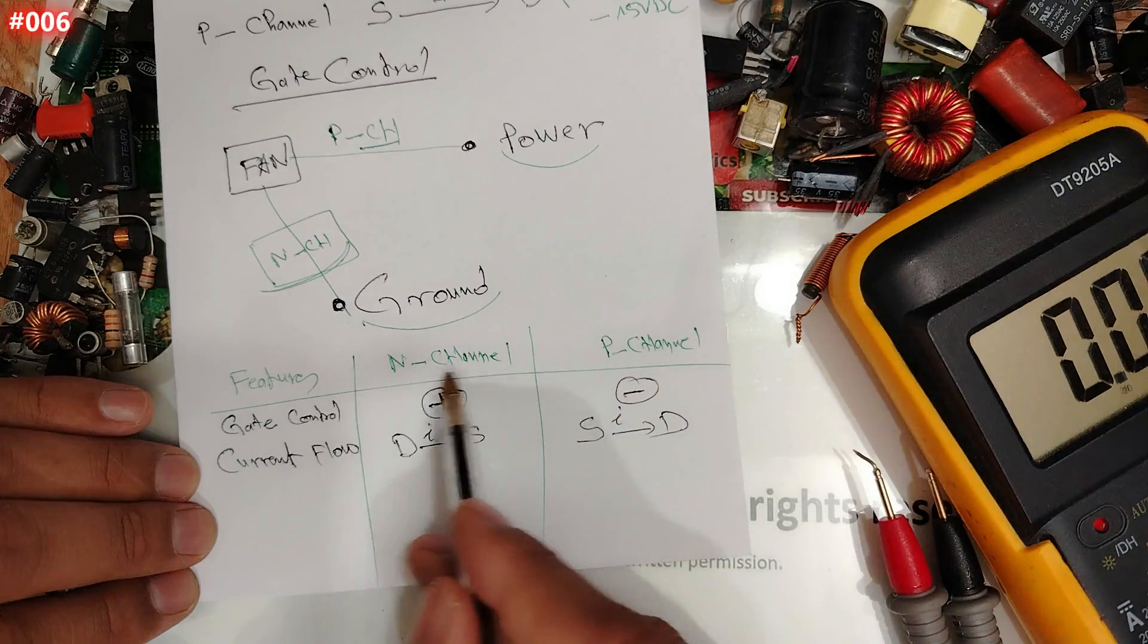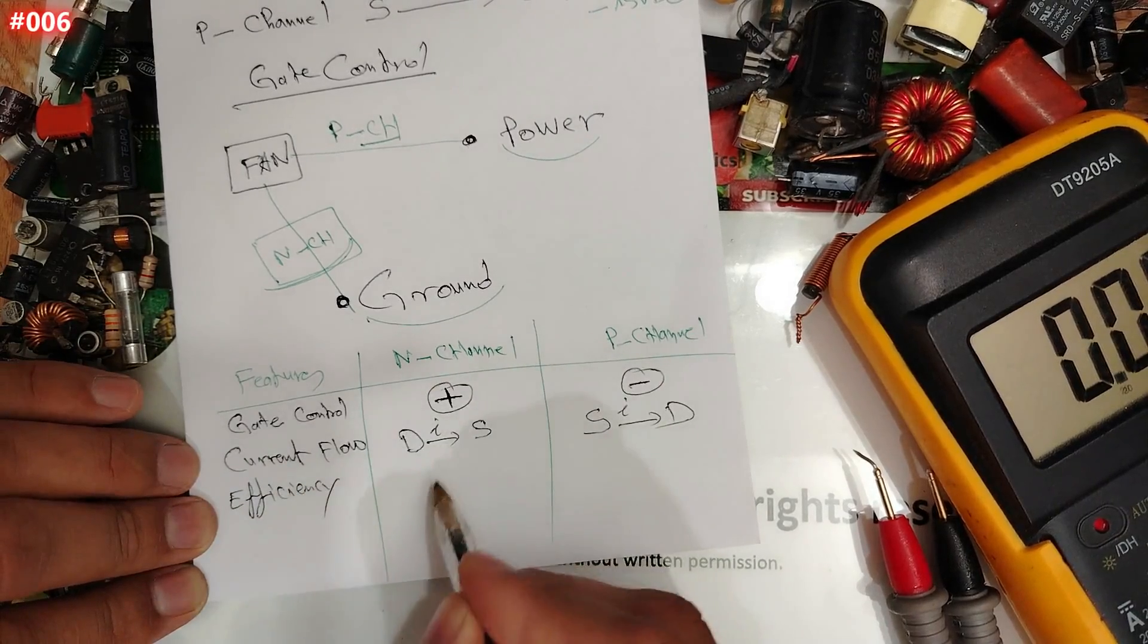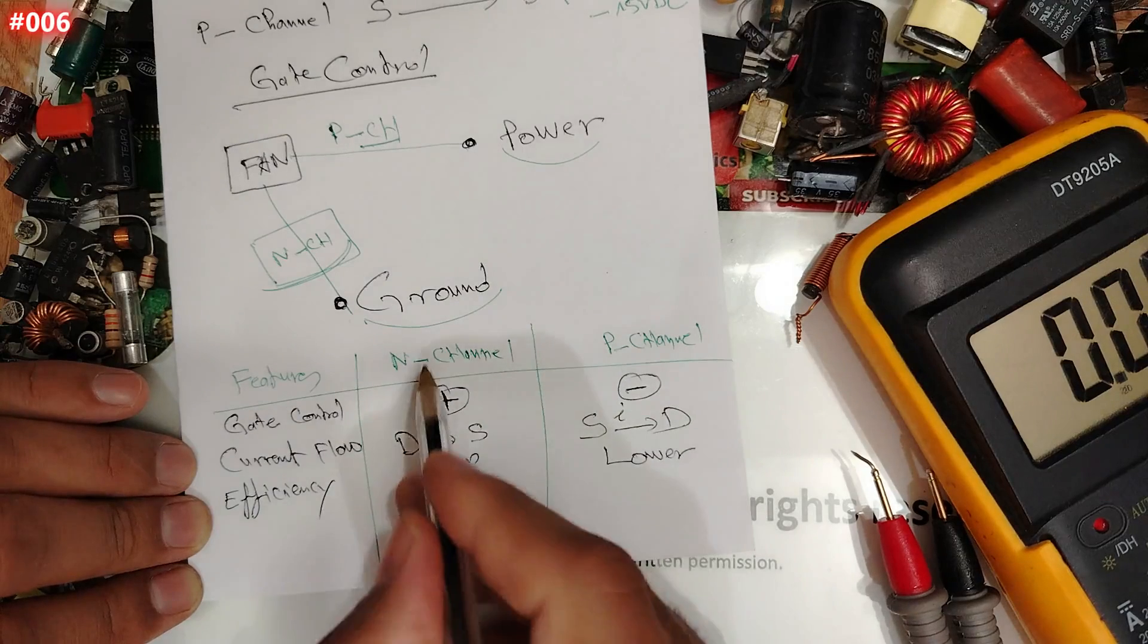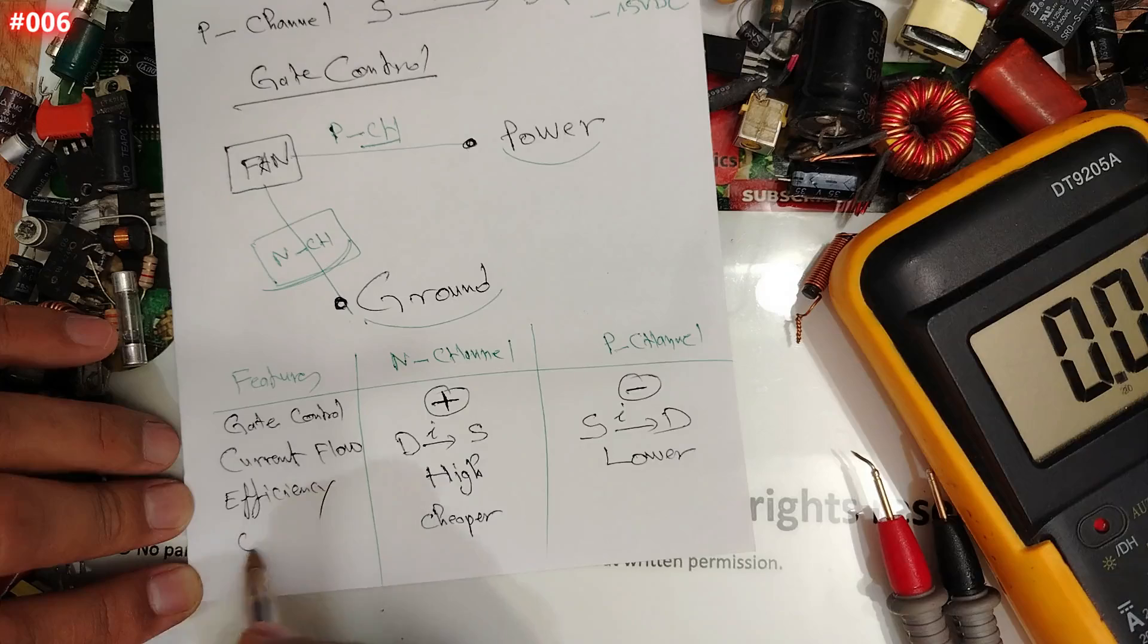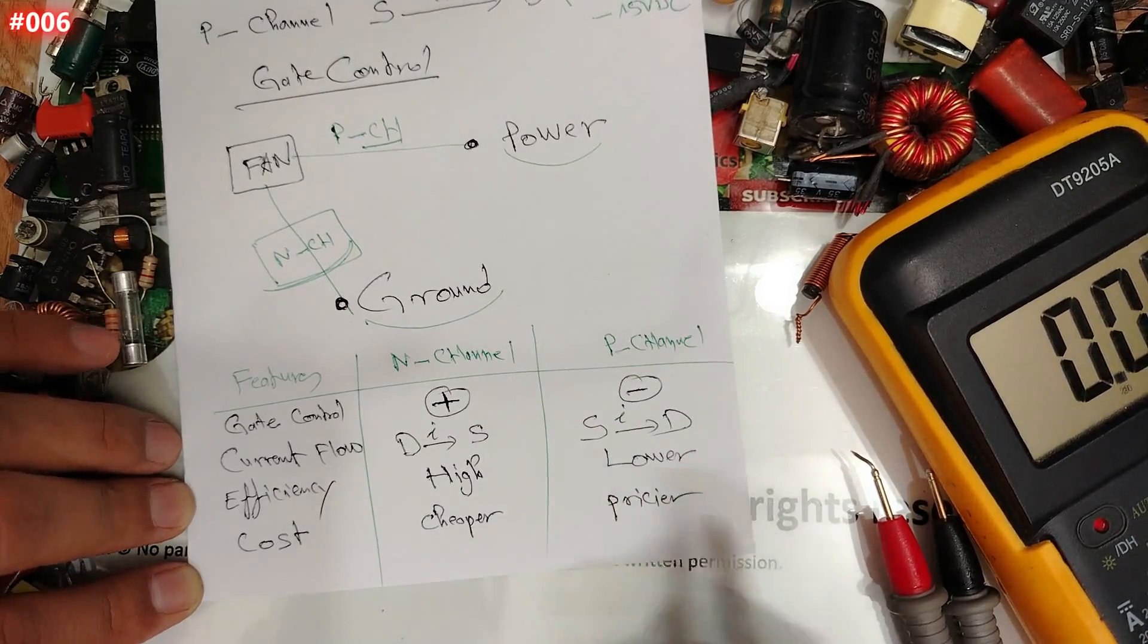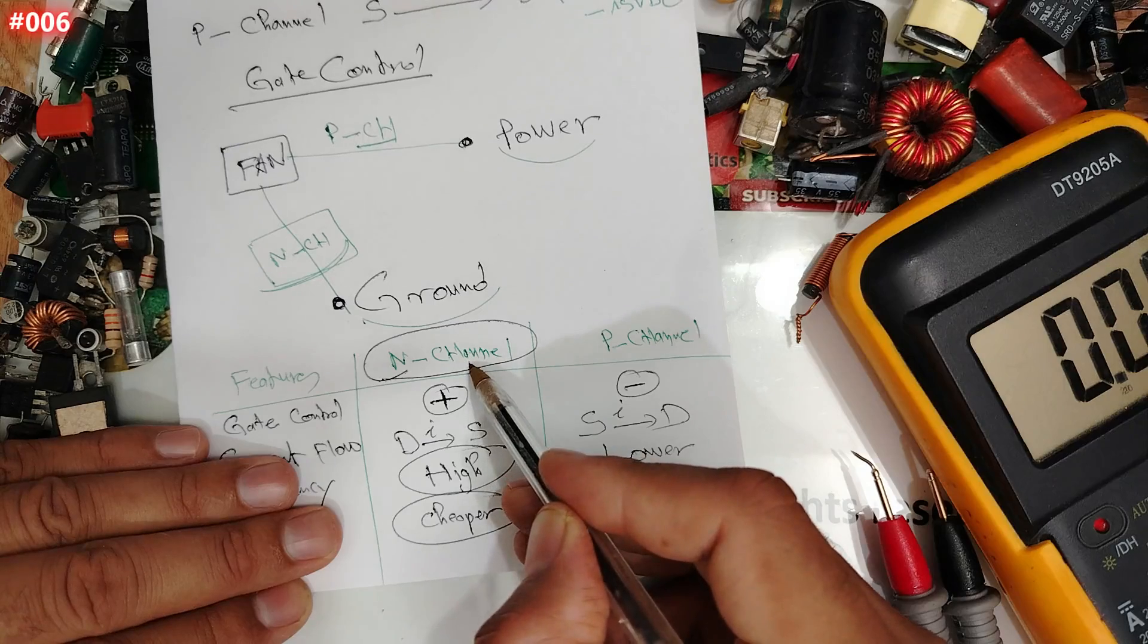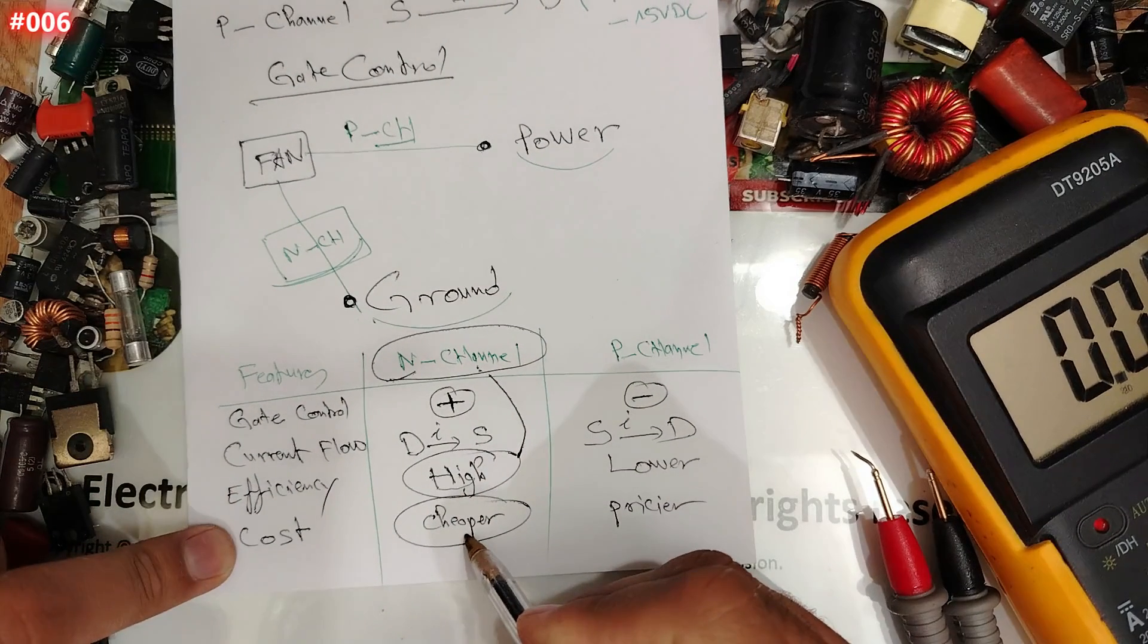Here we have current flows. Basically, why we use very often N-channel? Because the efficiency. The efficiency, my friend, here is high. The efficiency, my friend, here is high. And here, the efficiency is lower. And also, the N-channel are very cheaper in terms of cost. Here, we can put cost and P-channel price. So, these two characteristics is what made the N-channel a very famous MOSFET that we find everywhere. Because it has higher efficiency and cheaper in terms of cost.